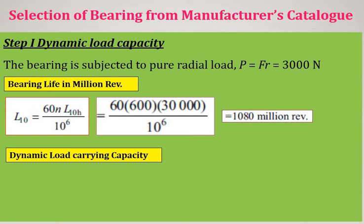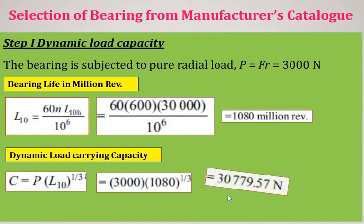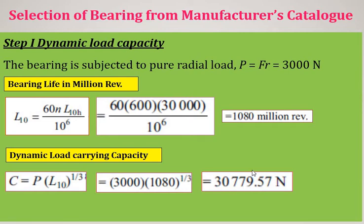Now we calculate the dynamic load carrying capacity C for a ball bearing using: C = P × L10^(1/3) = 3000 × 1080^(1/3). This gives C ≈ 30,780 N. This is the required dynamic load carrying capacity, and we will now select the bearing from the manufacturer's catalog based on this value.